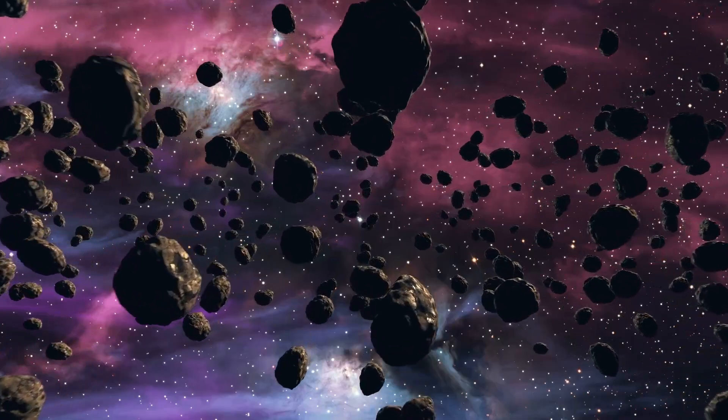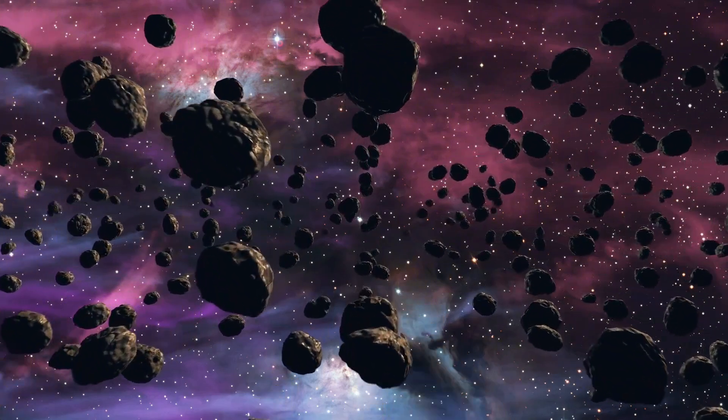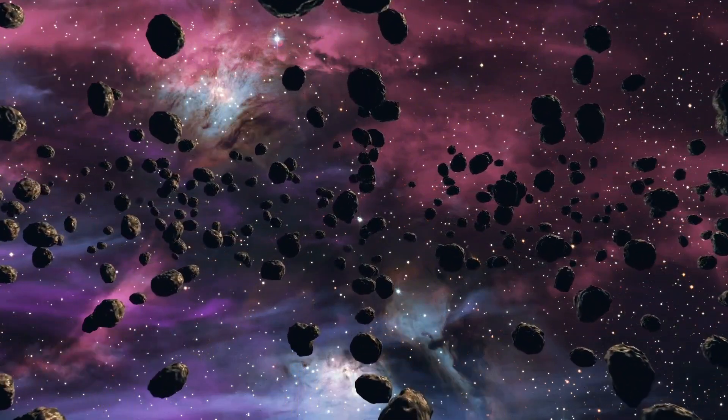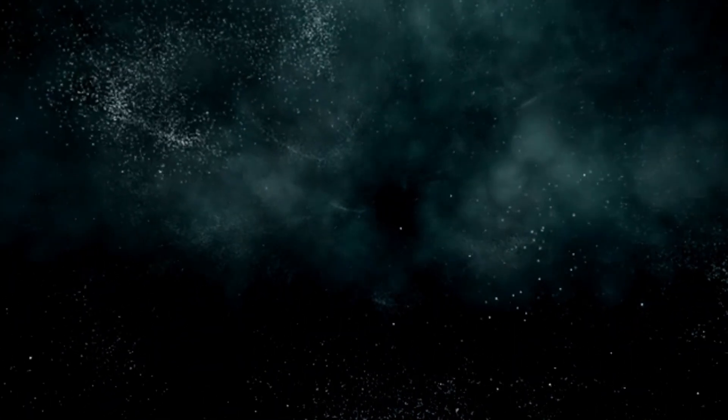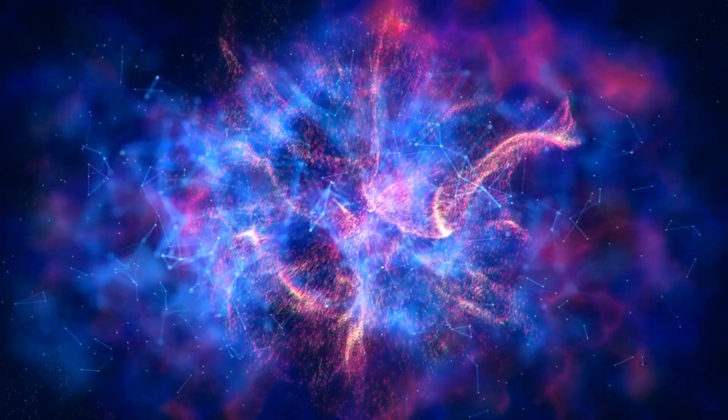Betelgeuse is currently undergoing fusion processes, continually evolving through elements like helium, carbon, oxygen, silicon, and iron. As a red giant star, it fuses helium into carbon in its core, a process that takes millions of years.